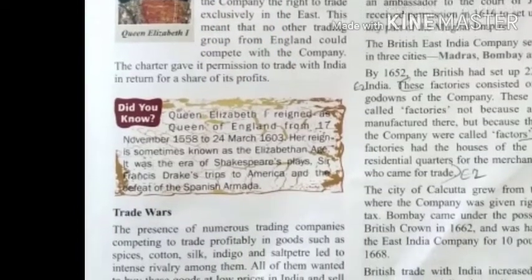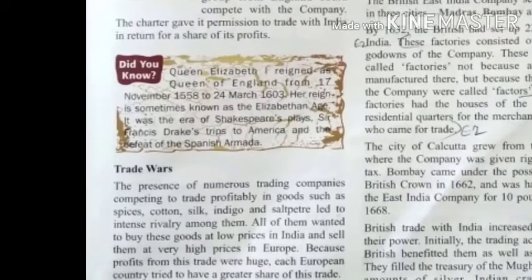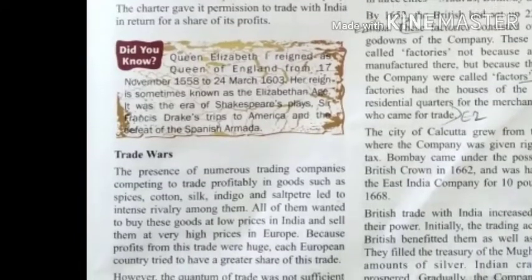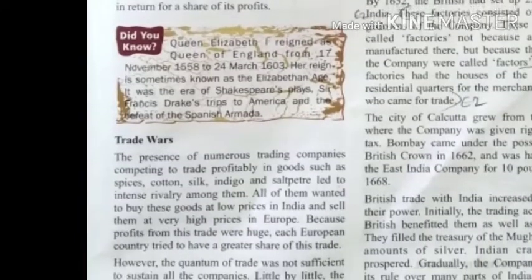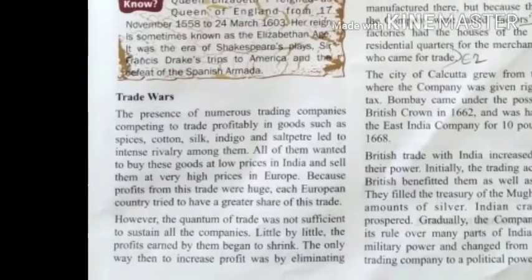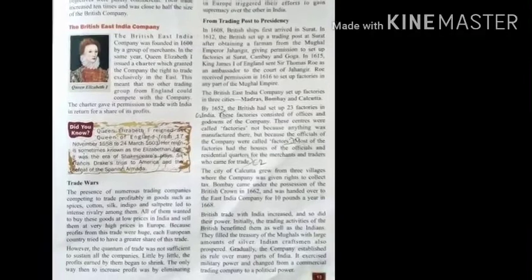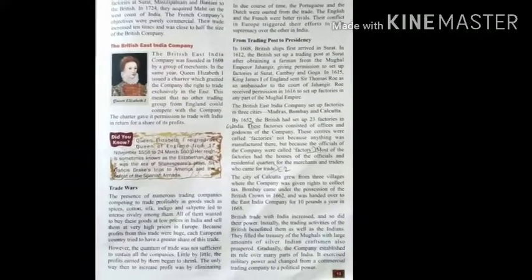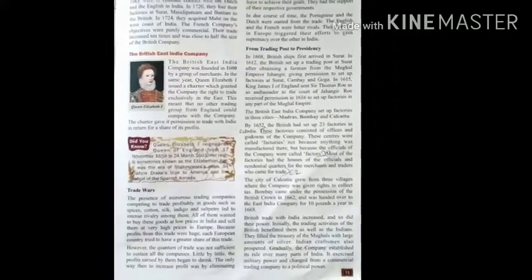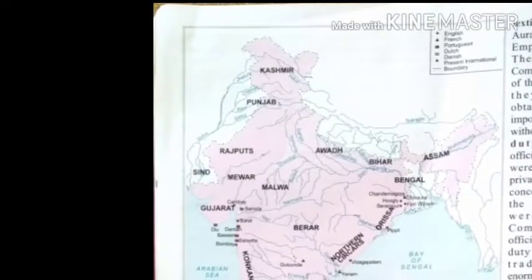After this, trade wars began among all of them, and gradually the Portuguese and Dutch withdrew from these wars. After that, the British and French remained in this rivalry. Their conflict in Europe triggered their effort to gain supremacy over the other in India.